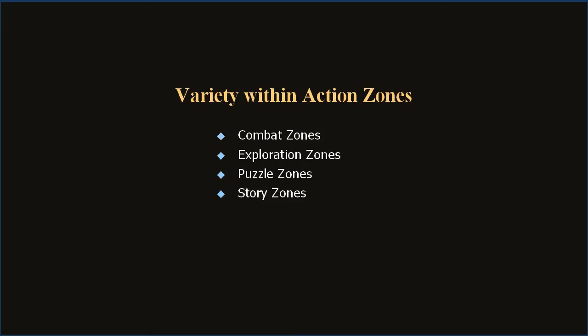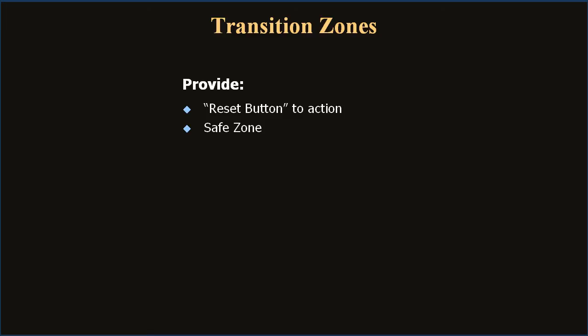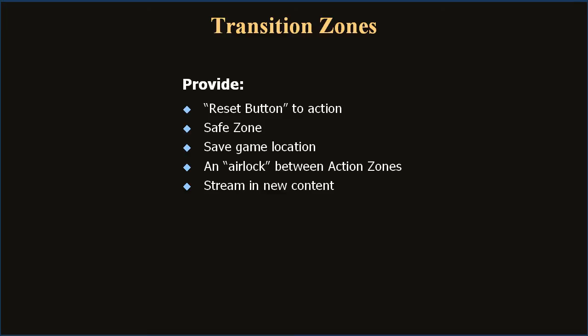To balance these high-point encounters we need transition zones. Action zones are strung together with transition zones to provide a fixed lull in the action and give the player time to prepare for the next encounter. Separating encounters enforces gameplay clarity, making it easier to manage, add, or subtract encounters throughout production. A transition zone is a guaranteed performance checkpoint providing: a reset button to the baseline adrenaline, a safe zone to rest and regroup, a place to save the game, an airlock between action zones preventing one seeing directly into another, opportunities to stream in new content, and the ability to split a level in two if needed.